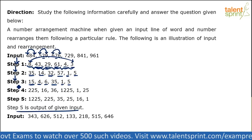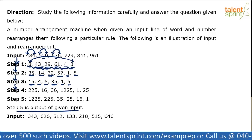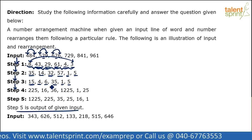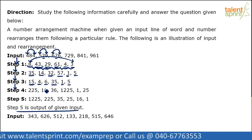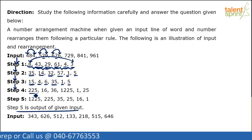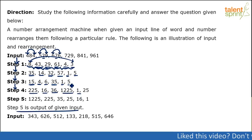From step 3 to step 4, the logic is very easy to identify. 15 has become 225, 4 has become 16, 6 has become 36 — clearly we are taking the squares of the numbers in step 3. 15² = 225, 4² = 16, 6² = 36, 35² = 1225, 1² = 1, and 5² = 25. So step 4 is comparatively easier than the previous steps.